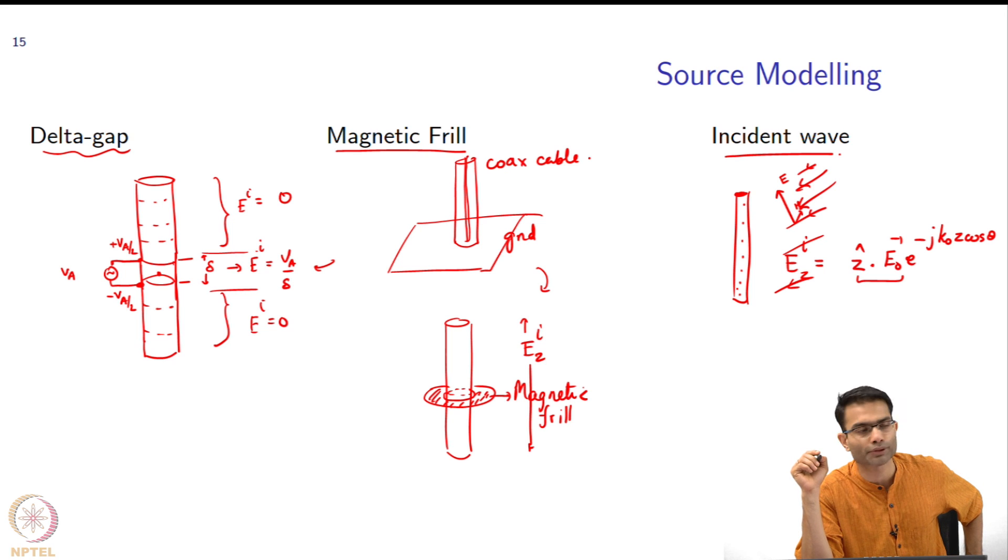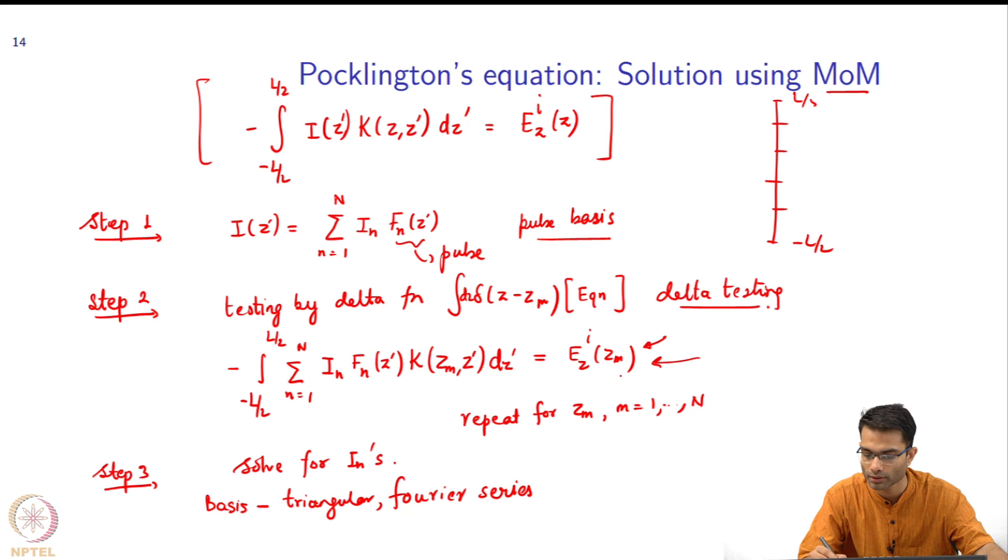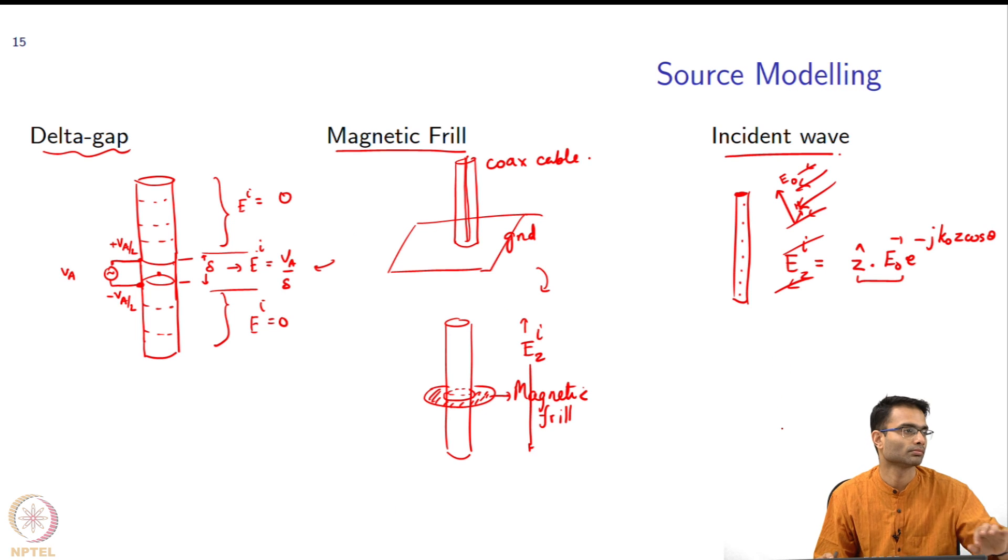E_naught is the amplitude of this incident wave that is coming to you, whatever is given to you in the problem. You just have to take the z component of it and in your column vector over here, put in the values, because that is the extra electric field that is coming over here in addition to the scattered field due to induced current. Those are the two fields which are present in the conductor which should together sum to zero. This was for the transmission case and this is for the receiving case.